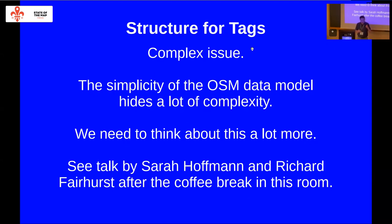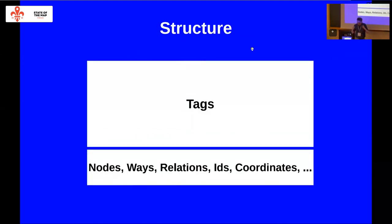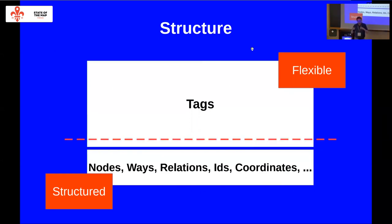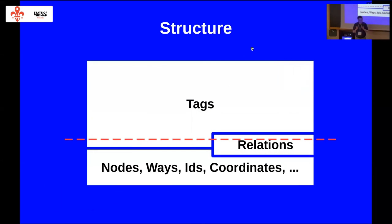Sarah Hoffman and Richard later after the coffee break in this room are going to talk about some of the tag issues too. If you think about the OSM data model, we have the strict structured part below — nodes, ways, relations — and the flexible stuff above with tags. Maybe the line should be somewhere else. Maybe we could put a little bit of structure into the tags. Relations are also quite flexible — sometimes too flexible if you know how hard it is to get data out of them.